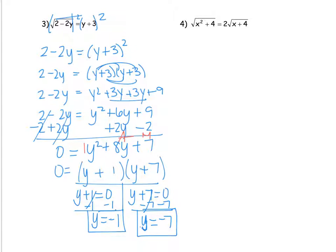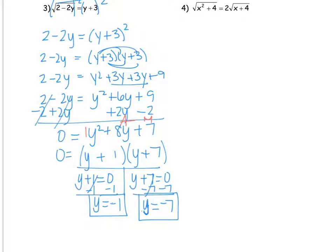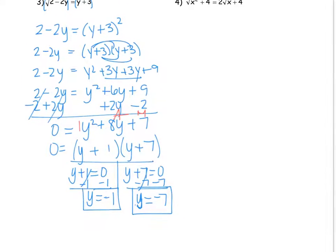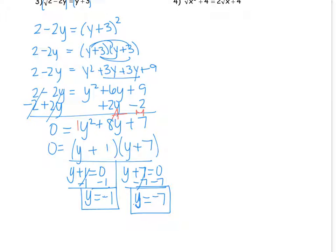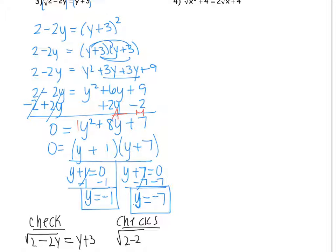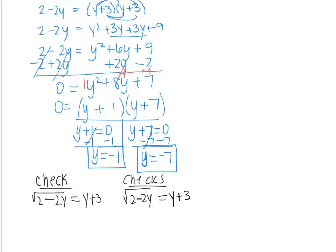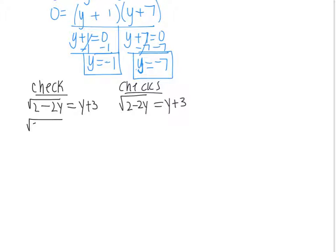Now, moment of truth — it's all about the check. If you need to jot any of this down, now's a good time to pause the video. We always write the original equation, and since we have two potential answers I'll write it twice. For y equals negative 1, substituting: 2 minus 2 times negative 1 is 2 plus 2, which is 4. The square root of 4 is 2, and negative 1 plus 3 is 2. So this works out nicely.